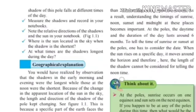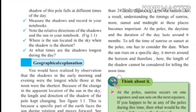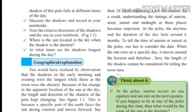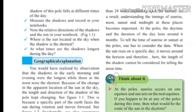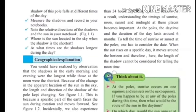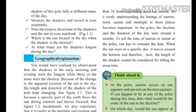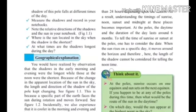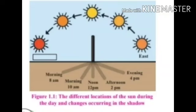The shadow of this pole falls at different times of the day. Measure the shadows and record in your notebooks. Note the relative directions of the shadows and the sun in your notebook. Where is the sun located in the sky when the shadow is the shortest? At what times are the shadows longest during the day?